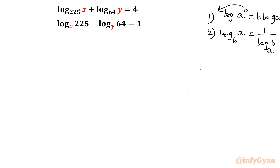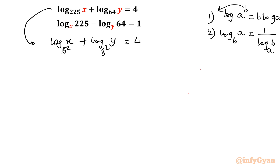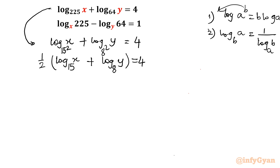I will use both properties right now. For equation 1, I can write 225 as 15 squared and 64 as 8 squared. By property 1, the exponent comes down, giving: half times log x base 15 plus half times log y base 8 equals 4, which simplifies to log x base 15 plus log y base 8 equals 8. This is our first equation.